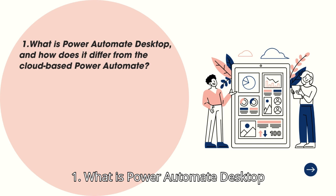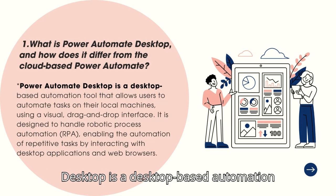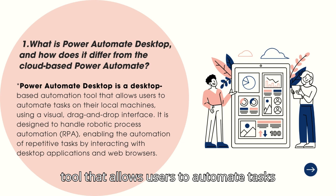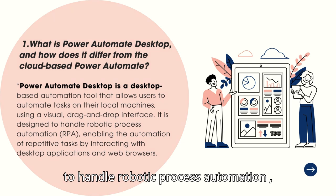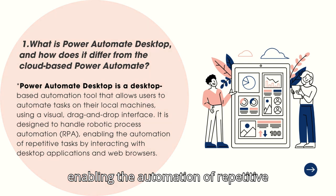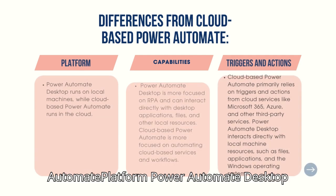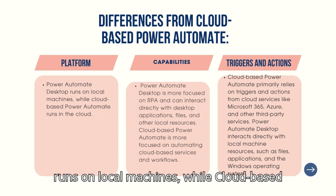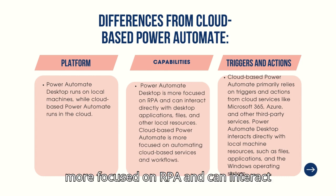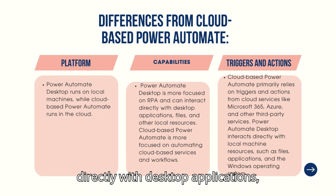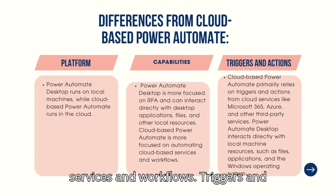Question 1: What is Power Automate Desktop and how does it differ from the cloud-based Power Automate? Power Automate Desktop is a desktop-based automation tool that allows users to automate tasks on their local machines using a visual drag-and-drop interface. It is designed to handle robotic process automation (RPA), enabling the automation of repetitive tasks by interacting with desktop applications and web browsers. Platform difference: Power Automate Desktop runs on local machines, while cloud-based Power Automate runs in the cloud. Power Automate Desktop is more focused on RPA and can interact directly with desktop applications, files, and other local resources, while cloud-based Power Automate is more focused on automating cloud-based services and workflows.